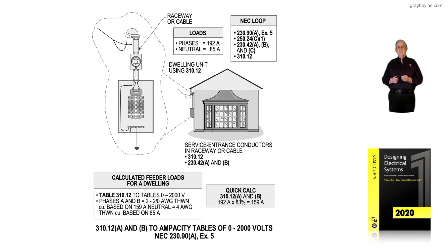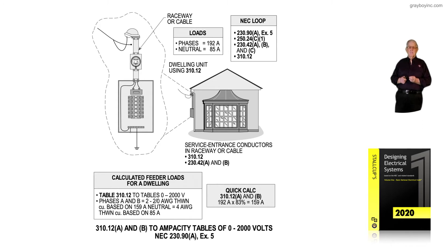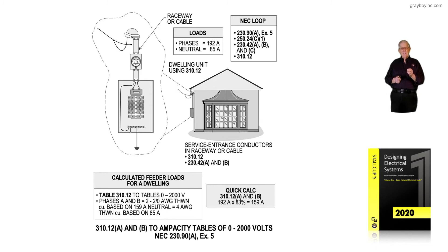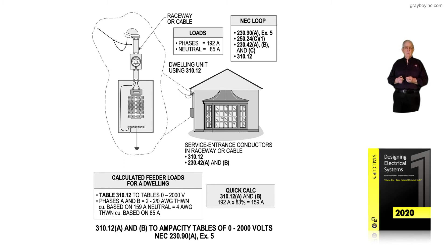As you see in the quick calc, 310.12A for services lets you apply 83% of the total ampacity calculated for a dwelling unit using the standard calculation or the optional. You get the 83% benefit. Notice that 192 calculated amps times 83% reduces down to 159, so a two-aught conductor is all we would need, instead of a four-aught conductor.